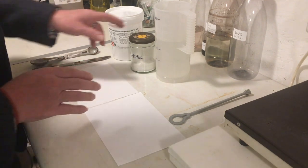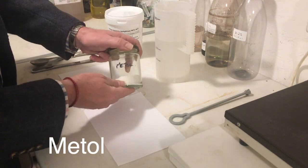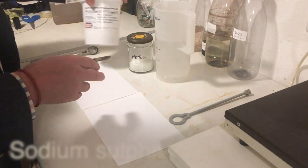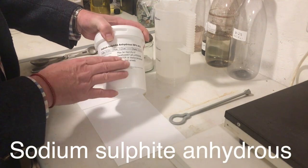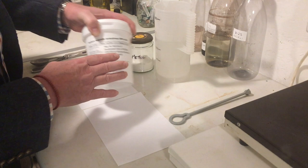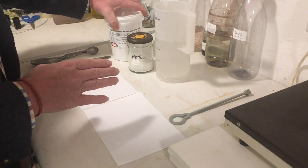So we're going to need Metol, easily bought at a photographic chemistry online store. Sodium sulfite anhydrous. This is a common chemical used in a lot of industries, easy to get hold of. They're the only two chemicals we need for D23.